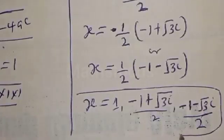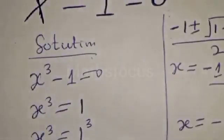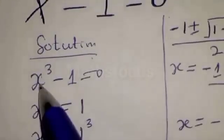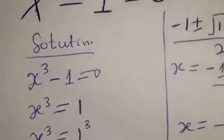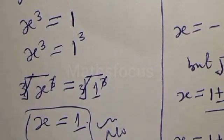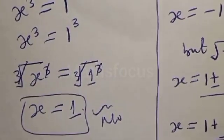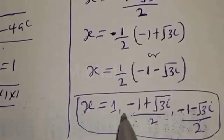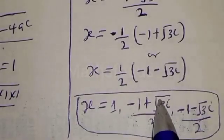That is our final answer. We can see that the solution for X cubed minus 1 equal to 0 is not 1 only. The full solution set is X equals 1, X equals minus 1 plus root 3 over 2, and X equals minus 1 minus root 3 over 2. Thank you.